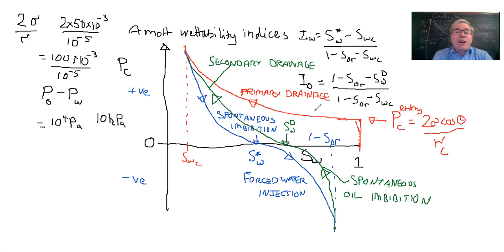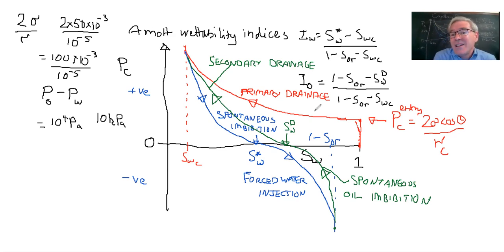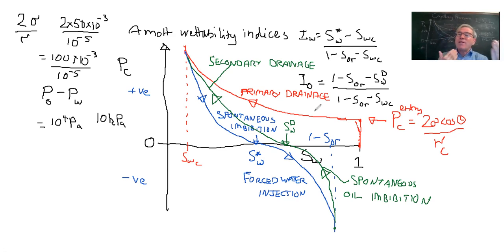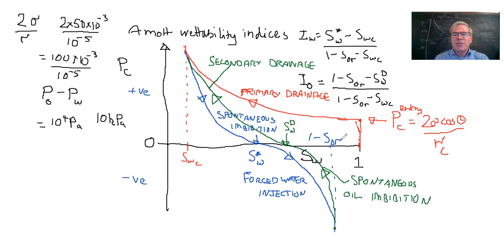I don't recommend — and will not write down — the Amott-Harvey index, where people take the difference between the two indices. Do not do this, because you lose information: you cannot distinguish between a neutrally-wet rock where both indices are zero, and a mixed-wet rock where both indices are positive but cancel each other. In this example, the water index is about 50% and the oil index about 30% — both positive, indicating a mixed-wet rock. You need to consider both indices independently.